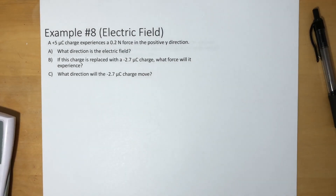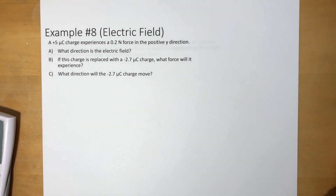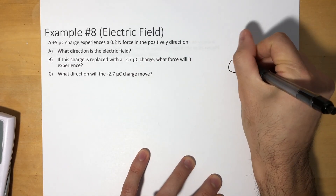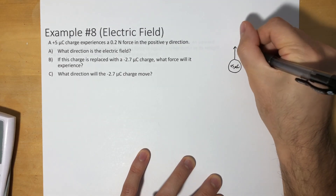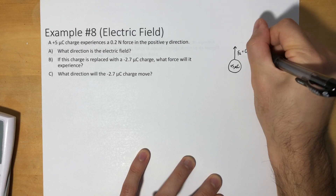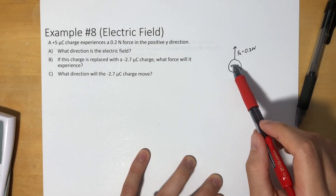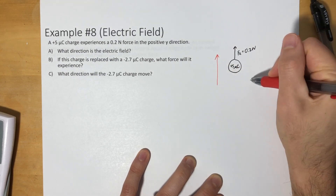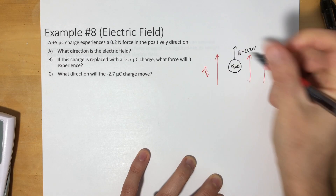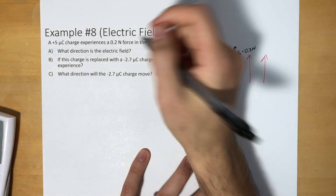Let's look at Example 8. A positive 5 microcoulomb charge experiences a 0.2 Newton force in the positive y direction. What direction is the electric field? We have a positive 5 microcoulomb charge experiencing a force of electricity going upward at 0.2 Newtons. The force of a positive charge goes in the same direction as the electric field, so if the force is going up, the electric field must also be going up — positive y direction.